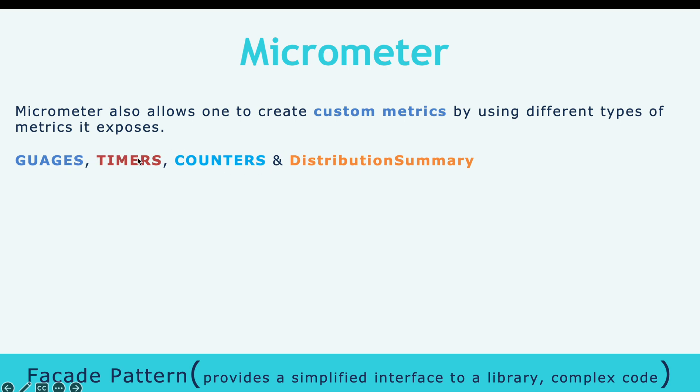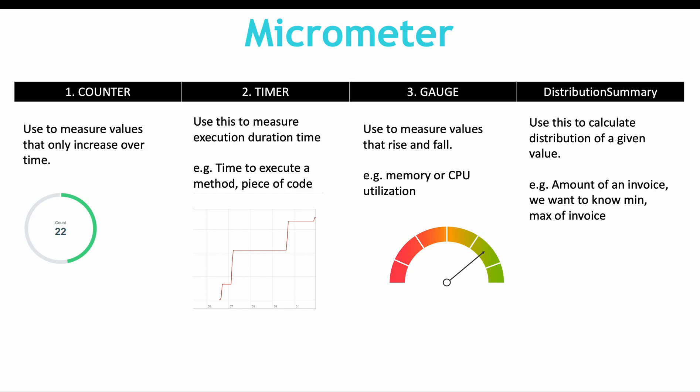The question is, what are these four types? A counter is a measure of values that only increase over time. For example, if you want to count how many times a specific method was called, you can implement a counter metric.